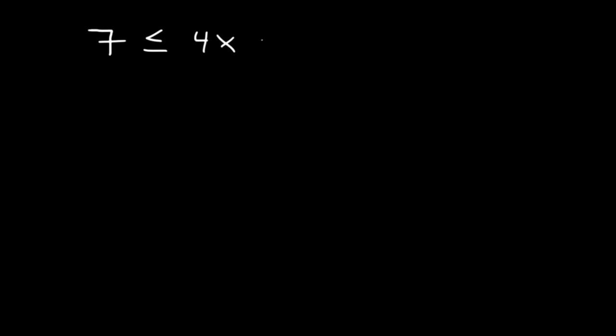Here's another problem: 7 is less than or equal to 4x plus 3, which is less than 23. This is a compound inequality associated with the word AND, unlike the previous OR type. Go ahead and pause the video to try it. The first thing we can do is subtract all three sides by 3.